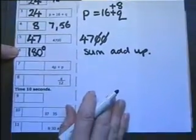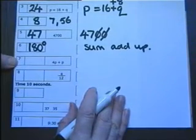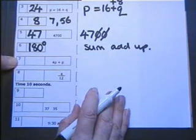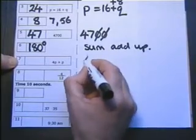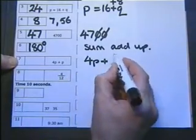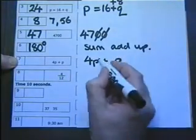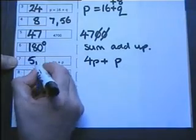Question 7: Write the expression on your answer sheet in its simplest form. We've got 4P plus 1P, and that's altogether 5P.